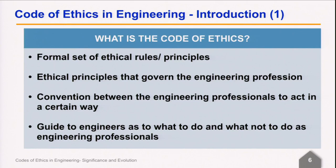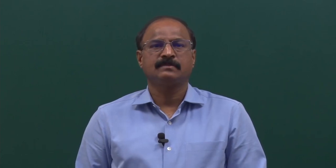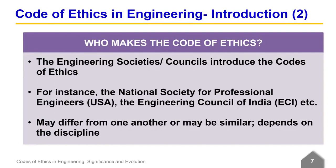It is like a convention between professionals to act in a certain way. It acts as a guide to engineers as to what to do and what not to do as engineering professionals. These codes are introduced by the professional societies or councils of each profession. For engineering, the national and international engineering council societies have their own set of codes. With increasing professionalism and growing demands, the code of ethics is being regularly amended and updated. For instance, the National Society for Professional Engineers in USA, the Engineering Council of India, etcetera, have their own codes of ethics.